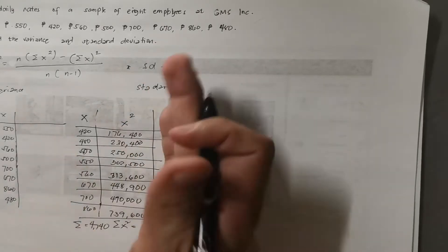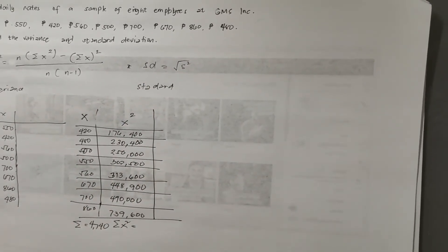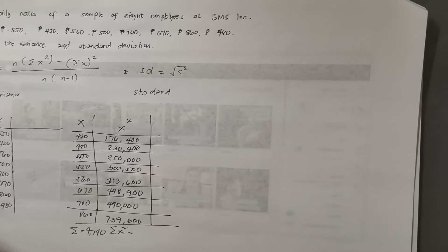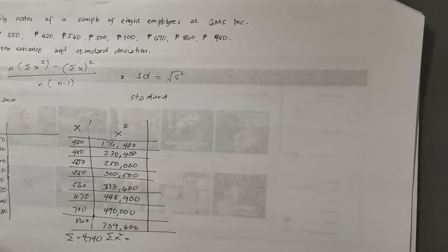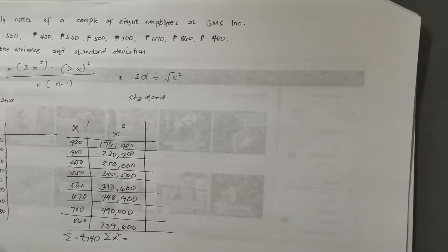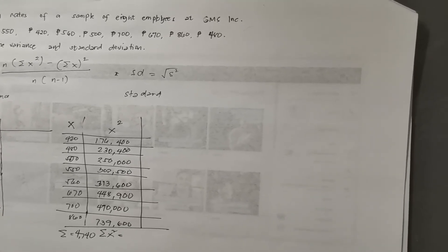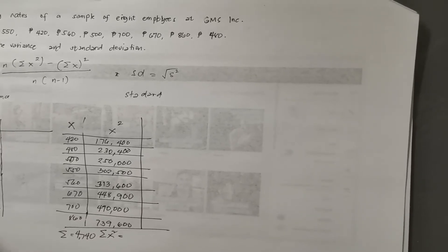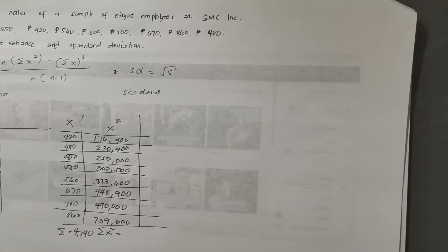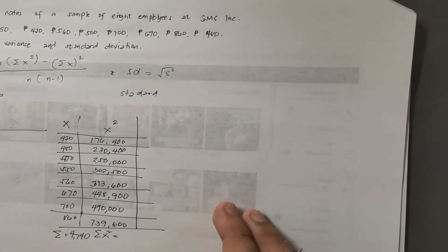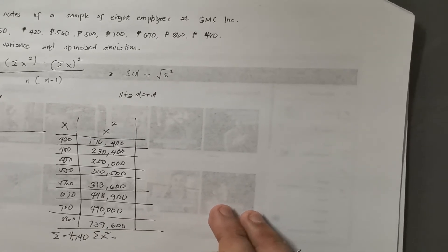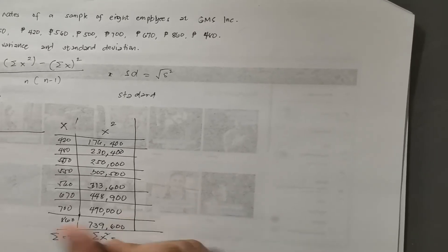And then, of course, the summation of the second column — which is X squared — the summation of the squared scores: 176,400 plus 230,400 plus 250,000 plus 302,500 plus 313,600 plus 448,900 plus 490,000 plus 739,600. Our total summation of X squared is 2,951,400.